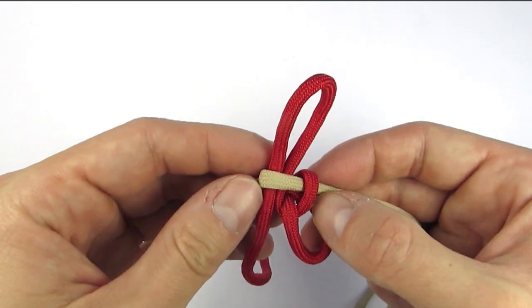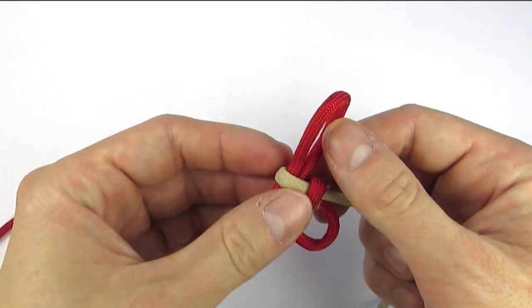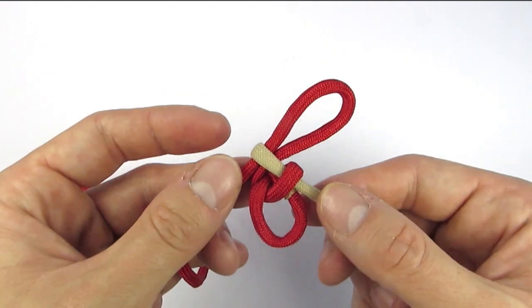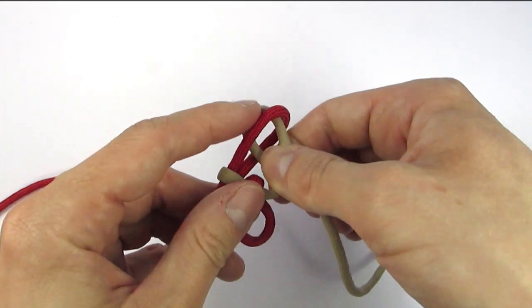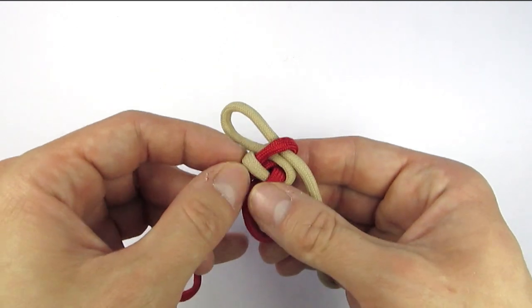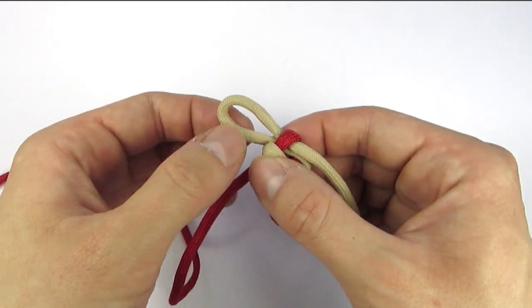And this is the first part in our Zipper Sinnet. So we're going to fold it a bit. It now faces the right side, so we're going to now pass the right cord through. Then tighten up the loop, then also pull on the bottom of the cord that we just passed through.